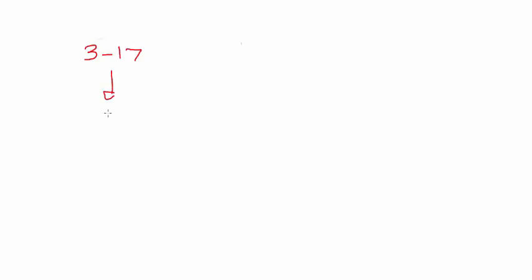Let's do three minus seventeen. If we flip the signs - just remember, because there's no sign in front of the three it means there's a plus - we flip the signs and now we have minus three plus seventeen.